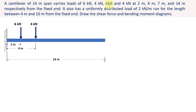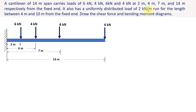The third load is 6 kN, located at a distance of 7 meter from the fixed end. The next load is 4 kN and it is located at a distance of 14 meter from the fixed end. We also have a uniformly distributed load of 2 kN per meter for the length between 4 meter and 10 meter from the fixed end.